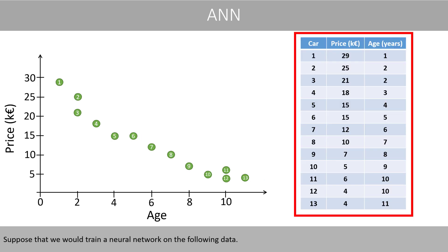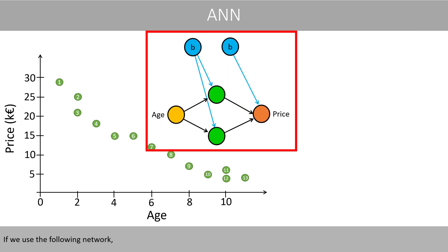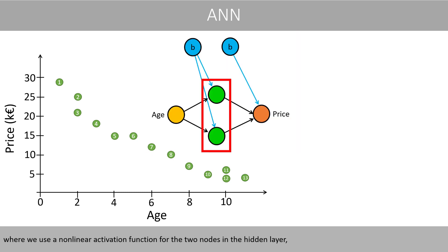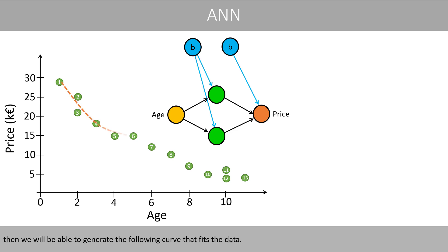Suppose that we would train a neural network on the following data. If we use a network with a nonlinear activation function for the two nodes in a hidden layer, then we will be able to generate a curve that fits the data.